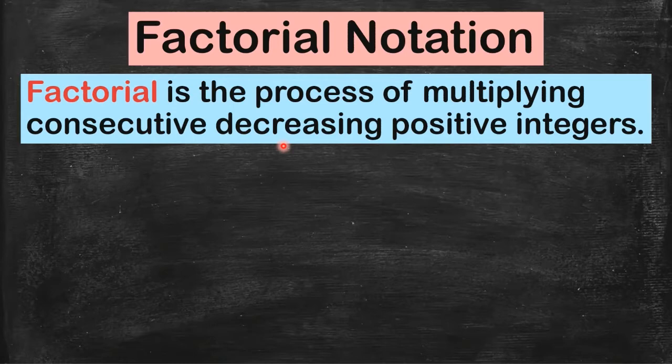Let me give you an example of consecutive decreasing positive integers. We can have 5, 4, 3, 2, 1. Pwede ring 10, 9, 8, 7, 6, 5, 4, 3, 2, 1.